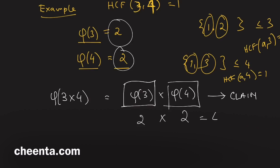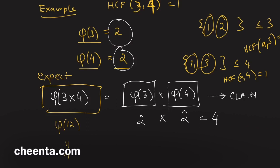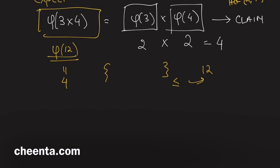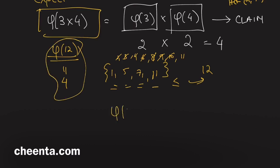So we expect φ(12) = 4. Let's verify: look at all numbers less than or equal to 12 whose HCF with 12 is 1. Those numbers are 1, 5, 7, and 11 — four numbers. So φ(12) = 4, as expected. This is the essence of the multiplicative property.